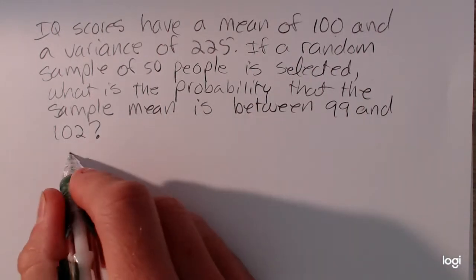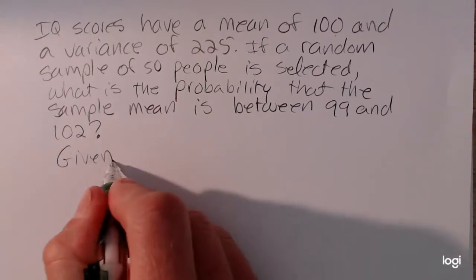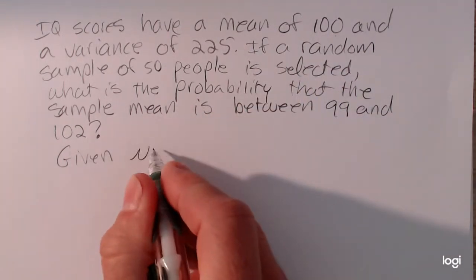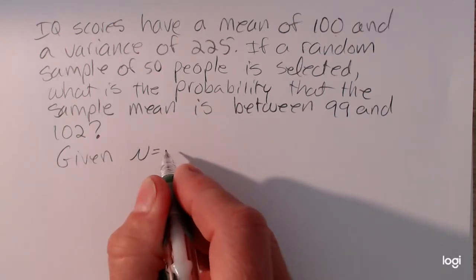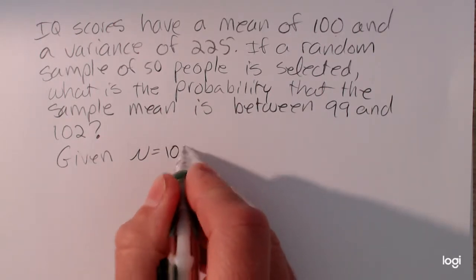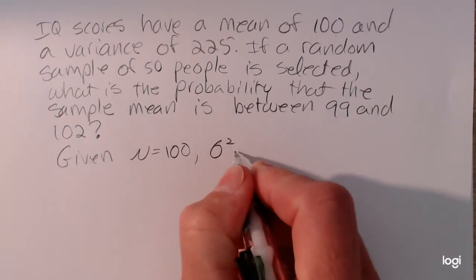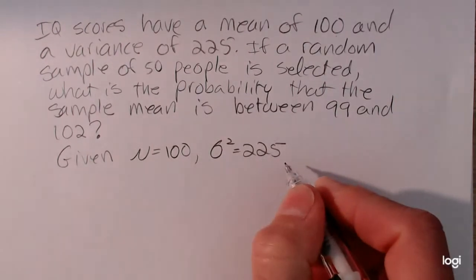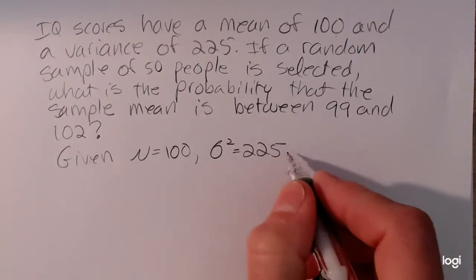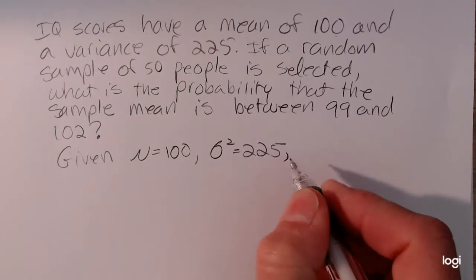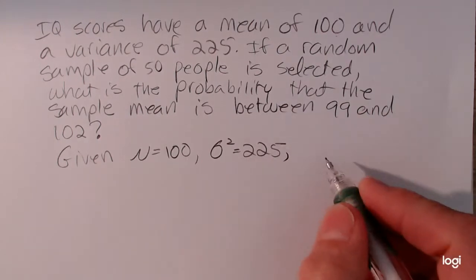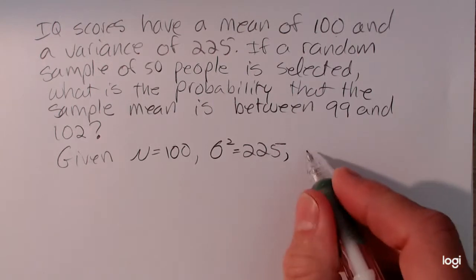So here's what we're given. We're given that the mean of IQ scores, the mean of the original distribution of individual values is 100. The variance sigma squared is 225. And we're going to need the standard deviation to find the standard error of the mean. So remember the relationship between the variance and the standard deviation is that the standard deviation is the square root of the variance.